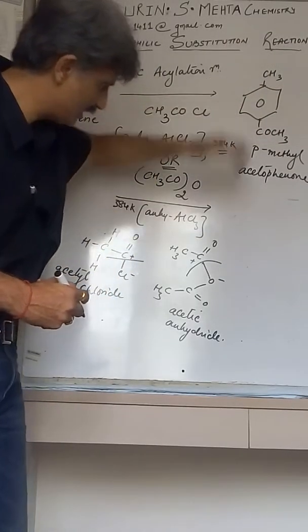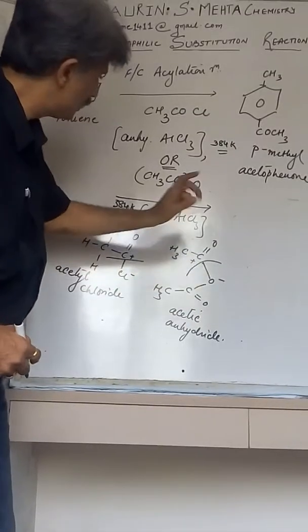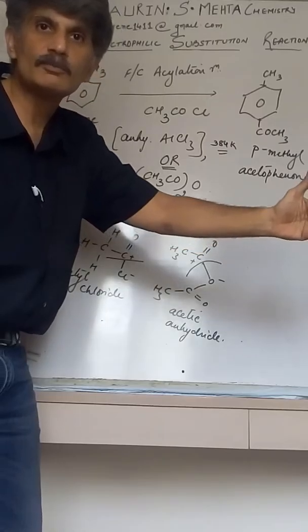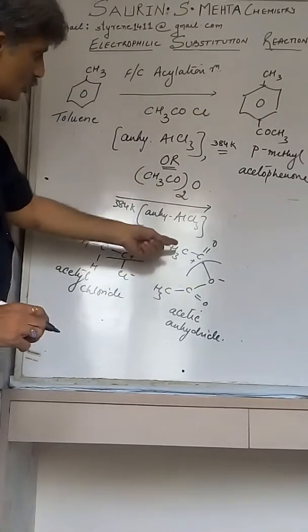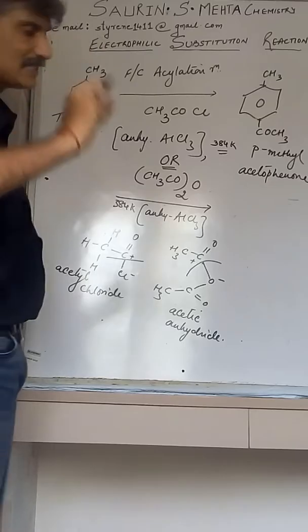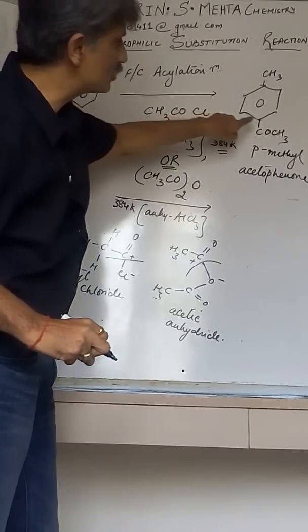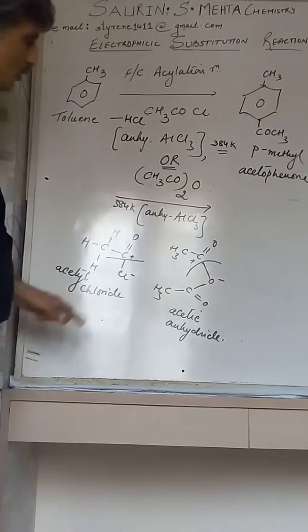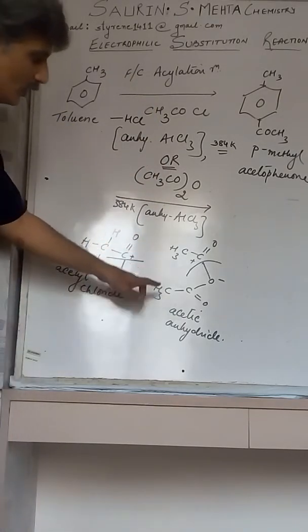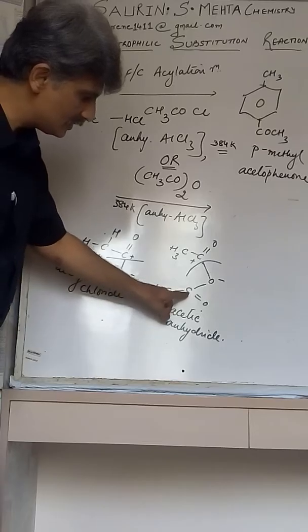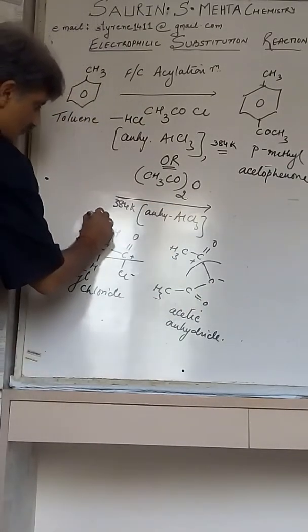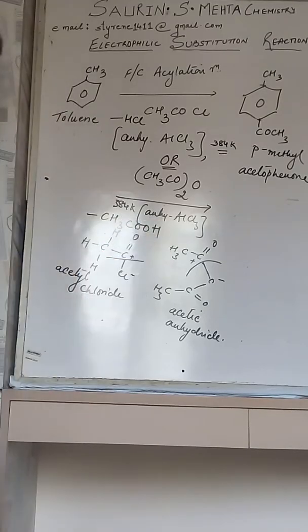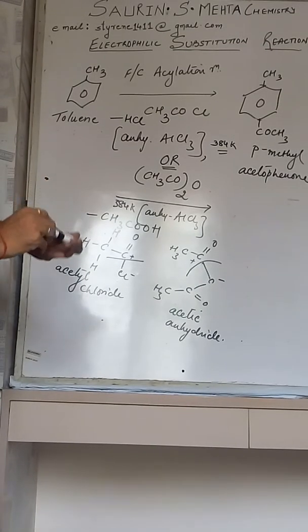Whereas CH3COO- combines with the H which got eliminated from the carbon at the para position. So in case of aluminum chloride, you can think simply it was Cl-, so it combines with the H and the byproduct formed will be HCl. Whereas in this case, the byproduct formed will be CH3COO- combines with H, so that will form CH3COOH, that is acetic acid.